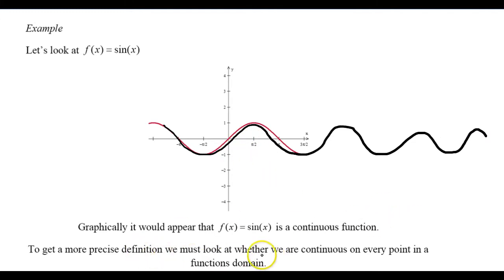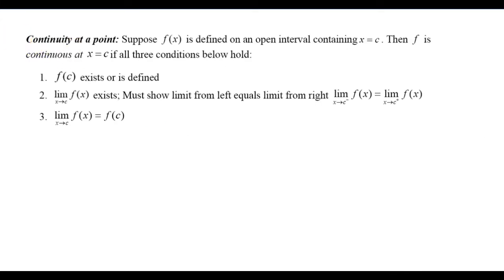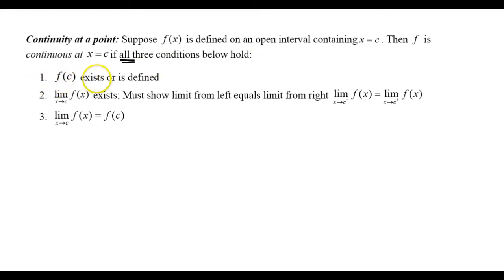But to get a more precise definition, we have to decide whether we're continuous at every single point in a function's domain. So now we've reached the three-part definition of continuity at a point. We're going to suppose f of x is some function defined on an open interval containing c. Then f is continuous at c only if all three conditions hold. Number one: f of c exists or is defined — when I substitute c into f of x, I have to get out a number.